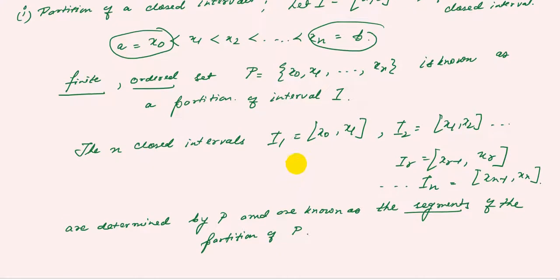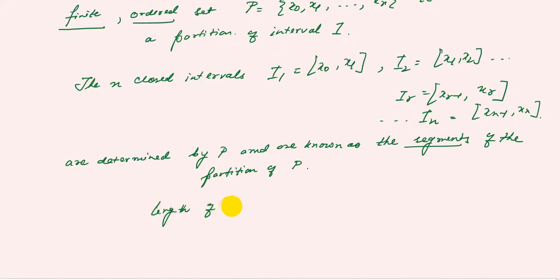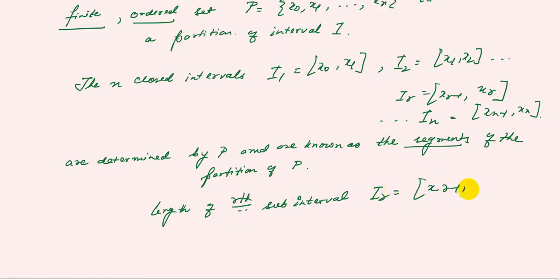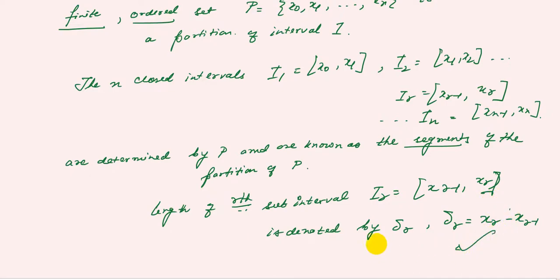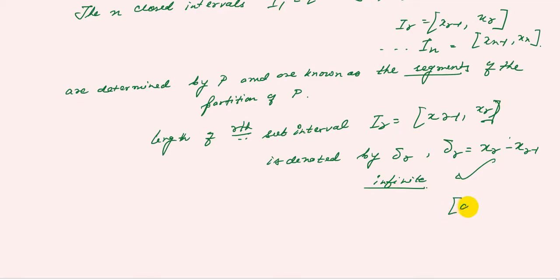The length of the r-th subinterval Iᵣ = [xᵣ₋₁, xᵣ] is denoted by δᵣ, where δᵣ = xᵣ − xᵣ₋₁. Now if you vary r, you can get an infinite number of partitions on the interval [A, B].